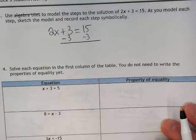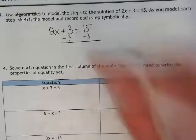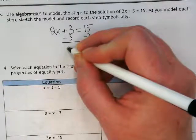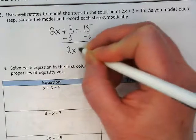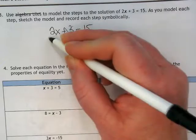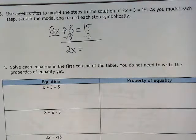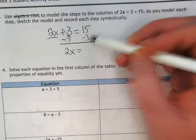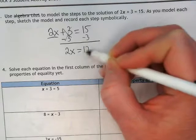Positive 3 and negative 3 equal 0. So what am I left with on my left side? 2x. Because these zeroed out, but this is still here, right? And then I have 15 minus 3 is? 12.